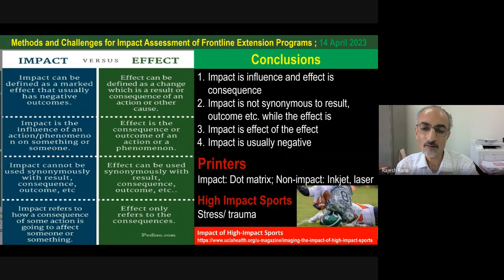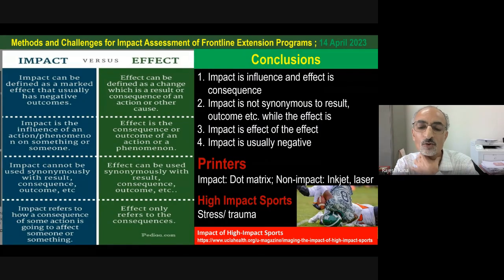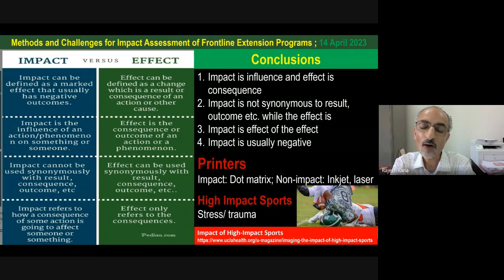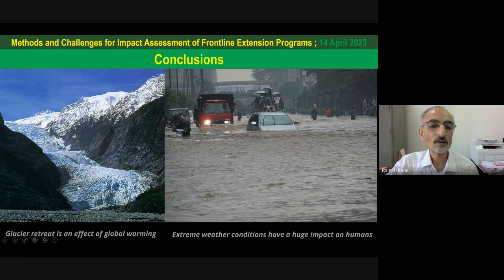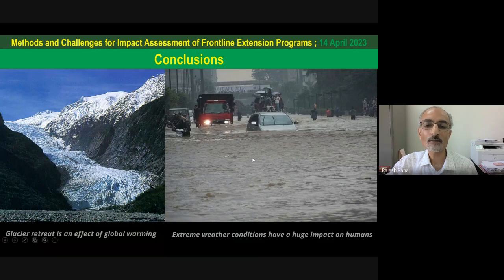For example, climate change is a variable; its effect is fluctuation in temperatures. The impact is what that temperature fluctuation does to crops and to farmers' income — that is the impact of climate change. Visually, impact is associated with dramatic examples such as glacier retreat and floods, reinforcing its classically negative connotation.